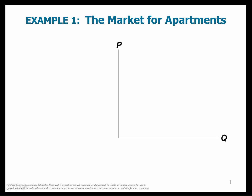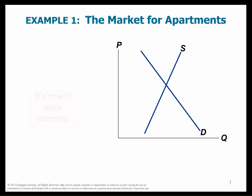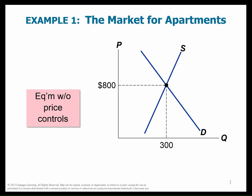Let's look at the market for apartments. This is a rental price of apartments and quantity of apartments. Remember, price always goes on the vertical axis, quantity always goes on the horizontal axis. This is always the way you draw your curves. Demand goes down, supply goes up, and we have an equilibrium. I have this written as 'without price controls' because this is just the same way as we did it back in Chapter 4.